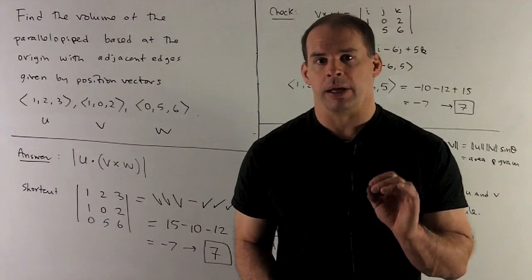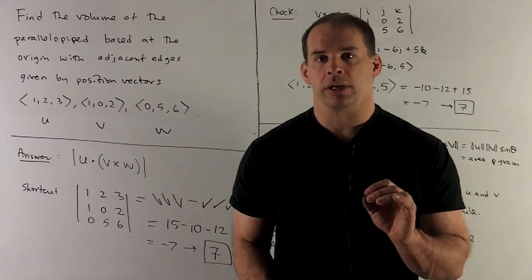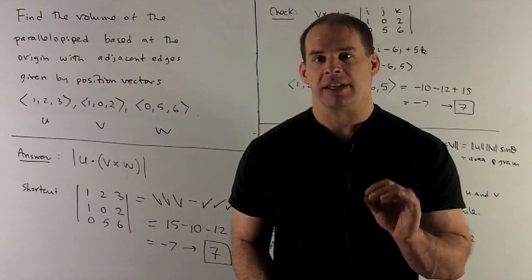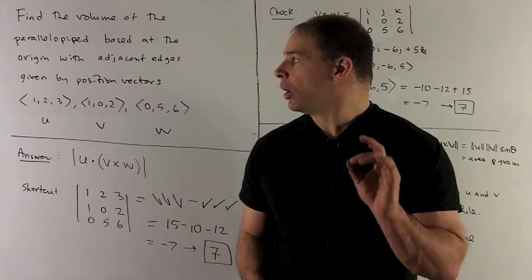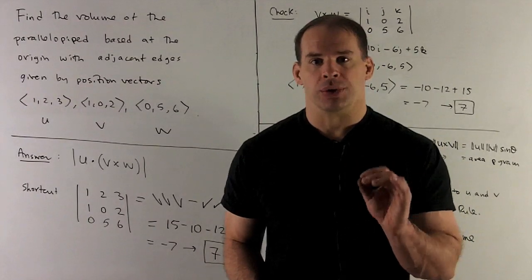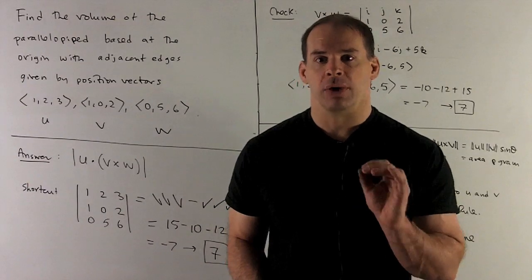Find the volume of the parallelepiped based at the origin with adjacent edges given by the position vectors (1, 2, 3), (1, 0, 2), and (0, 5, 6).